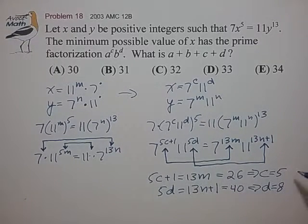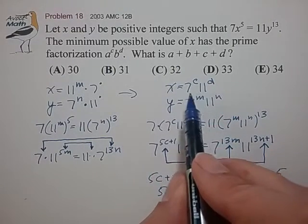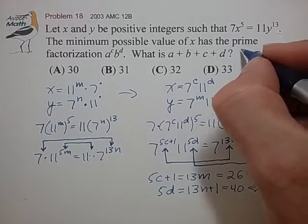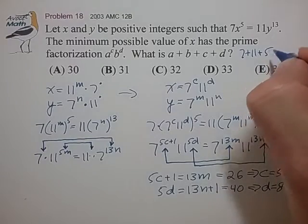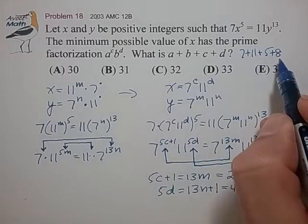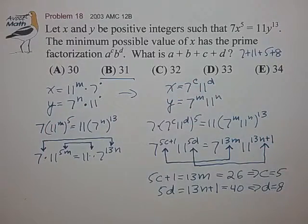So great, looks like we've solved for c and d. a and b are the bases of x, 7 and 11, so we have everything we need. So that's 7 + 11 + 5 + 8. That's 18 plus 8 is 26 plus 5 is 31. So that's choice B, 31.